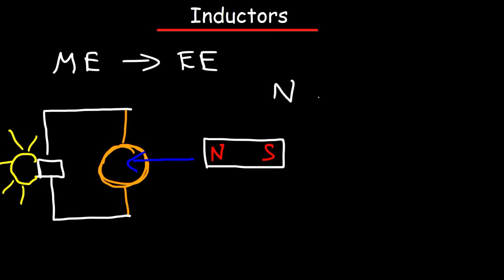Wrap more wires around that coil and you're going to get more energy out of it. Number two: increase the speed at which you move the magnet into or out of the coil, because that's going to induce more current within the coil.